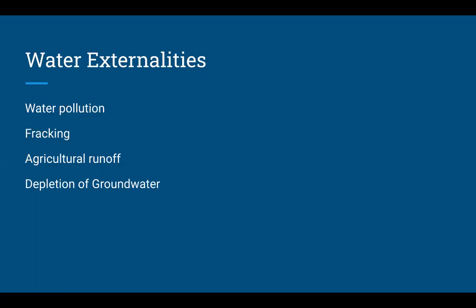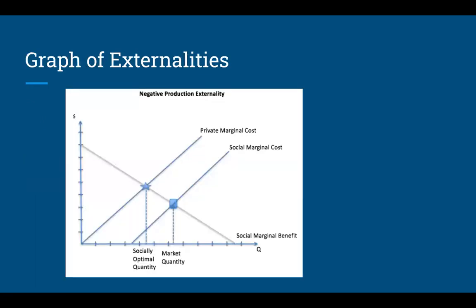Things like carbon taxes are often trying to internalize those externalities so we get back to the socially optimal level. Society is willing to pay some price for things like energy or driving cars. The socially optimal amount is not zero — it's just less than what is going to happen, because when people have coupons, they buy more. That's basically how we can think of externalities.